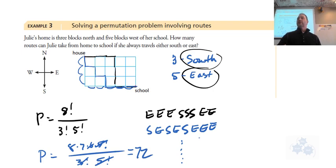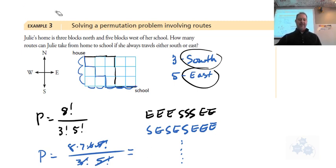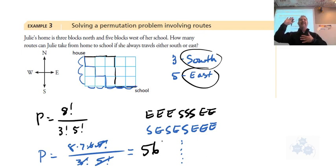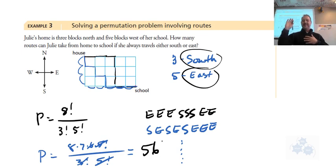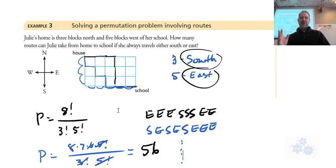Any questions on these three examples? The teacher then notices an arithmetic error from earlier — apologizing for getting the wrong number in the calculator step — a good reminder that even math teachers make mistakes.